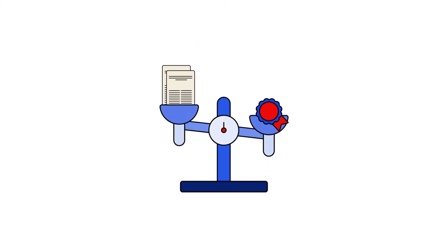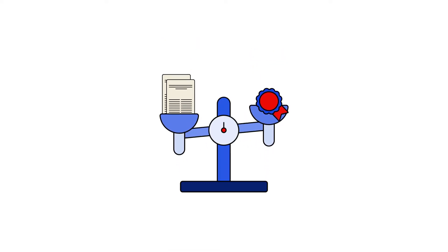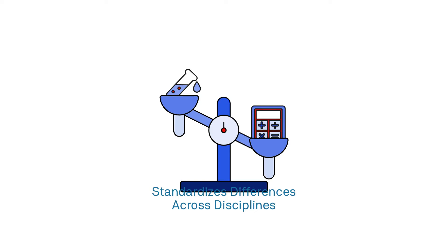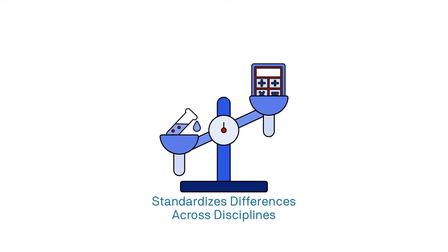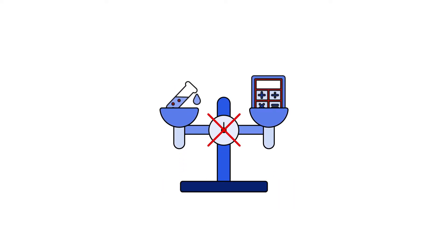There are many metrics which exist, however, it's important to be aware of their limitations. Some metrics relate to quantity of research, and others relate to quality. Some metrics will standardise scores to account for different research practices in each discipline, while others won't.